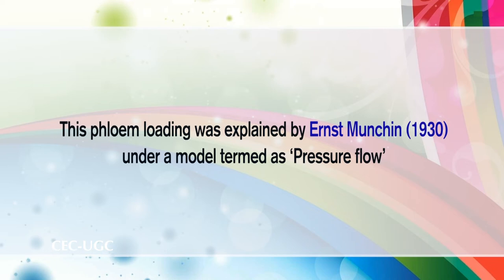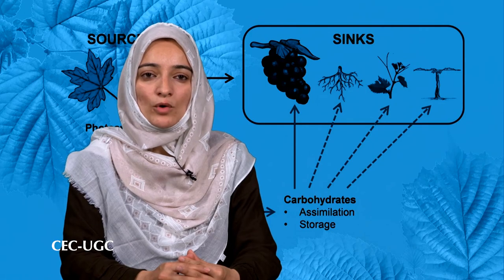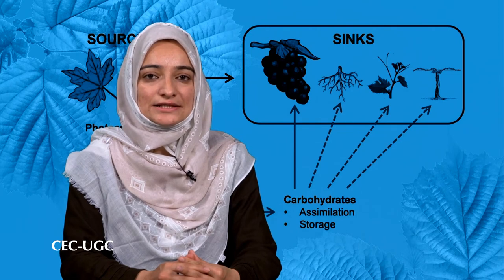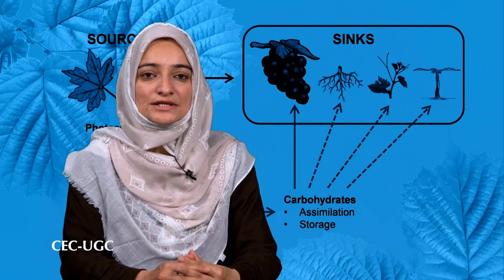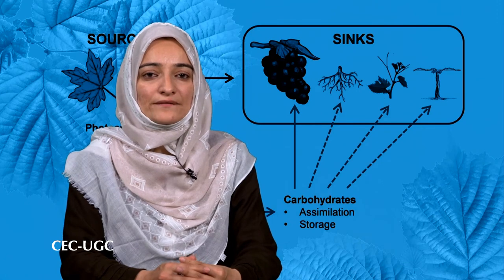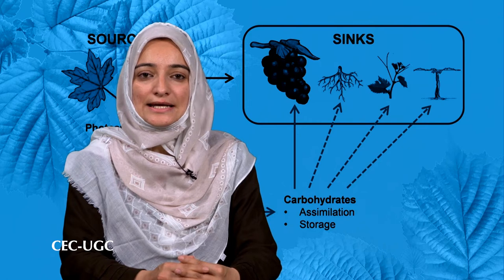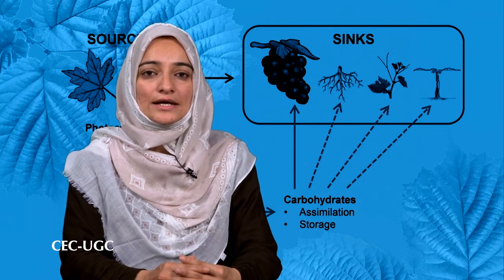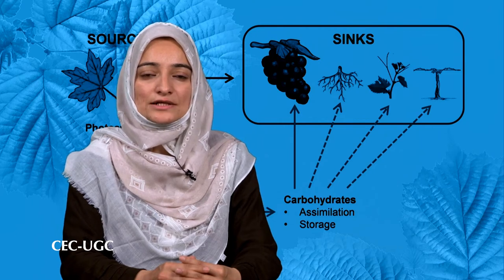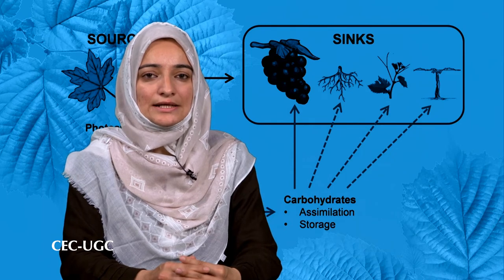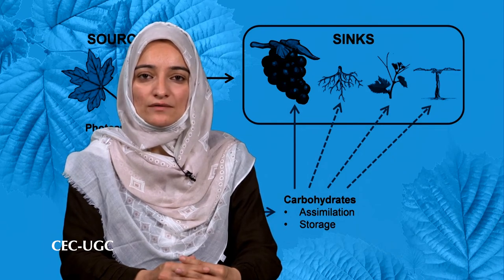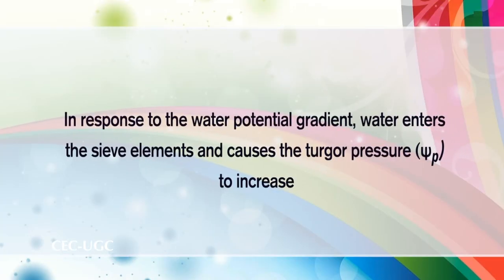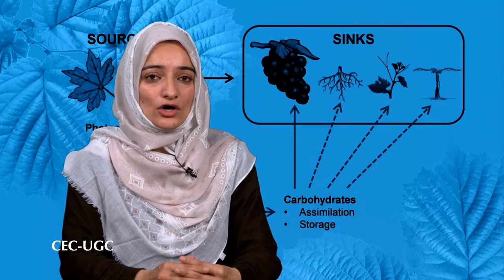Phloem loading was explained by Ernst Münch in 1930 under a model termed the pressure flow model. This model states that flow of solution in the sieve elements is driven by an osmotically generated pressure gradient between source and sink. The pressure gradient is established as a consequence of phloem loading at the source and phloem unloading at the sink. In source tissues, energy-driven phloem loading leads to accumulation of sugars in the sieve elements, generating a low solute potential and causing a steep drop in water potential. In response to the water potential gradient, water enters the sieve elements and causes turgor pressure to increase.